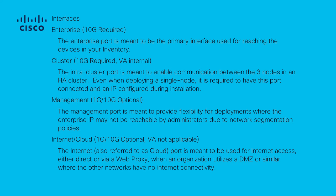The cluster interface is also a 10 gigabit port on the physical appliance, but on the virtual appliance this is not mapped to any virtual adapter. It is used only for communication between Catalyst Center appliances in an HA cluster.